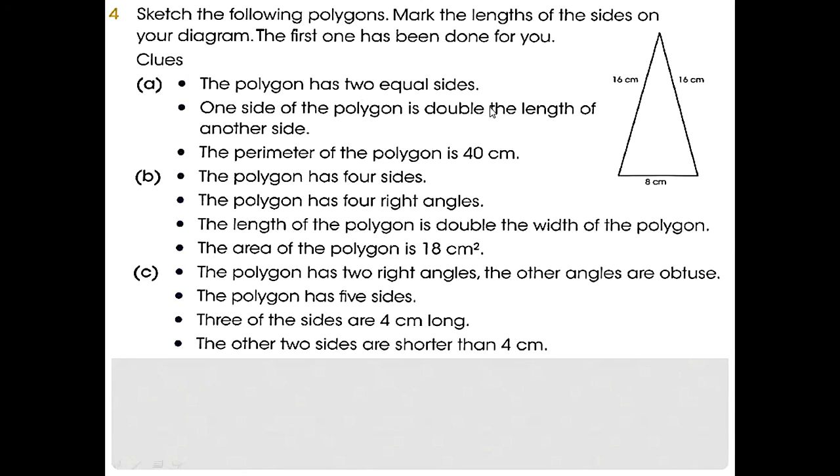They are two equal sides. One side of the polygon is double the length of another side. One side means this one is double than the other. The perimeter should be 40, so when we add this, our answer must be 40.